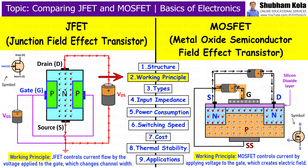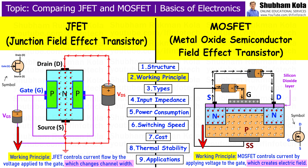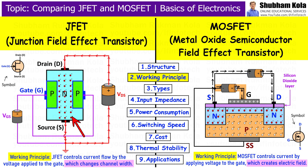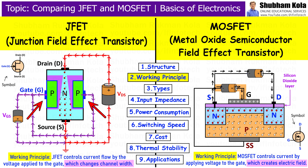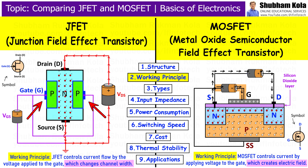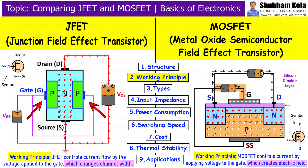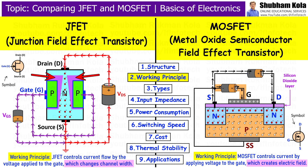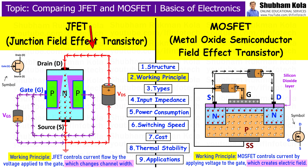Next is working principle. Moving on to the working principle, JFET and MOSFET operate in different ways to control current flow. In a JFET, the current flowing between the source and drain is controlled by the gate voltage. The gate current is zero in JFET, meaning that it doesn't consume any current. The voltage at the gate changes the width of the depletion region, controlling how much current flows.